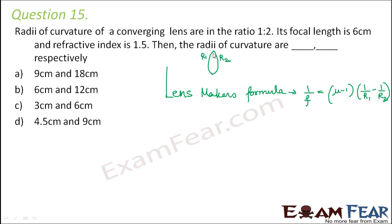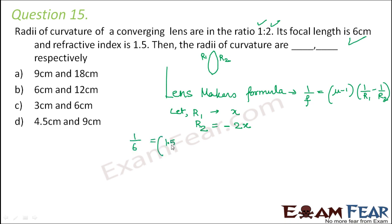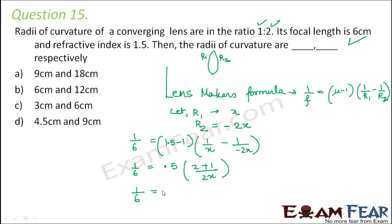Let R₁ = x. Since the radii are in ratio 1:2, R₂ = 2x. For a convex lens, R₁ is positive and R₂ is negative, so R₂ = −2x. Substituting into the lens maker's formula: 1/6 = (1.5 − 1)(1/x − 1/(−2x)) = 0.5 × (2 + 1)/(2x) = 0.5 × 3/(2x).